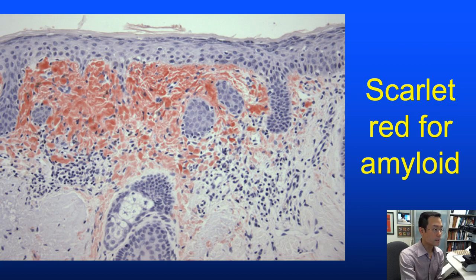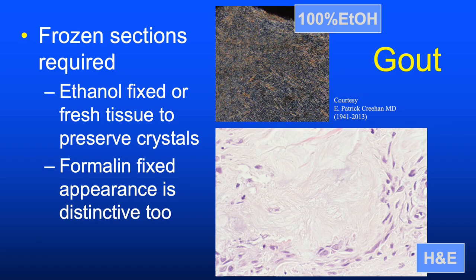Scarlet red stains lipid and is much more sensitive—maybe almost too much. For gout, frozen or absolute ethanol-fixed tissue is required to appreciate the highly birefringent crystals. With formalin-fixed specimens, the crystals are washed away and birefringence is no longer present, but the H&E appearances are distinctive.